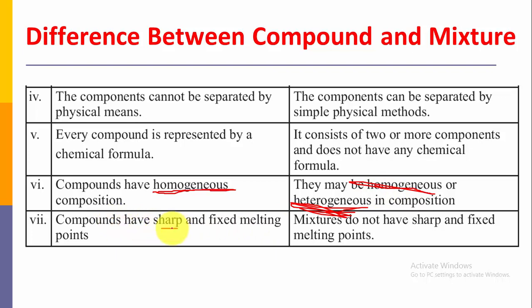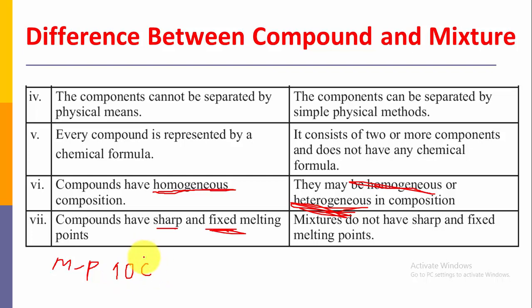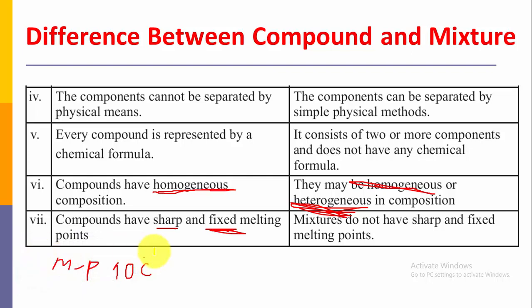The seventh difference: compounds have a sharp and fixed melting point. A pure compound has a fixed point at which it starts melting — for example, if a compound has a melting point of 10 degrees Celsius, it always melts at 10 degrees Celsius, which is called its purity. But mixtures do not have any sharp and fixed melting point; their melting and boiling points vary according to their composition and number of components.